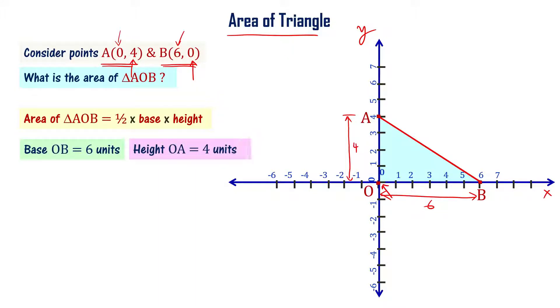Now, area of the triangle can be written as half times 6 times 4, meaning half into 24, that is equal to 12. So the area of this particular triangle is 12 square units.